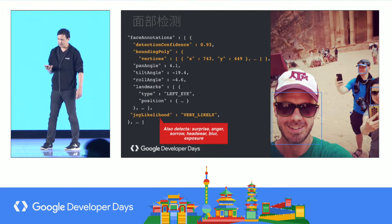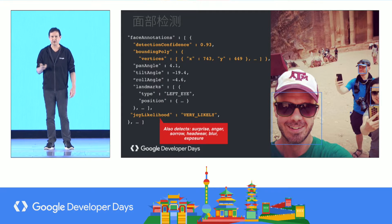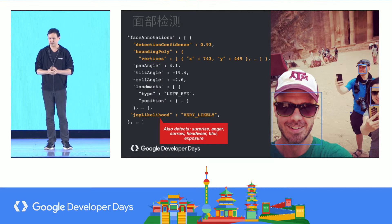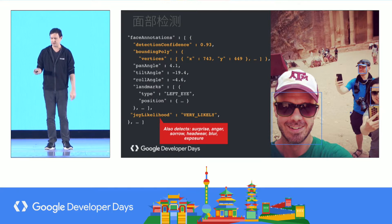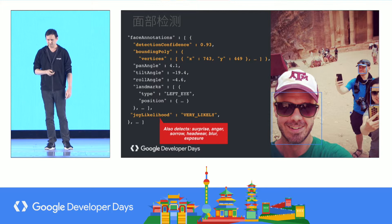Here's an example of a data payload coming back from the face detection function you can call on the Vision API. You can see there's a confidence that a face is present, bounding boxes around the faces, the three-dimensional rotation of the head within the box, and then some emotional states. We give five or six different emotions, and here you can see this person in the photo is very likely to be experiencing joy.